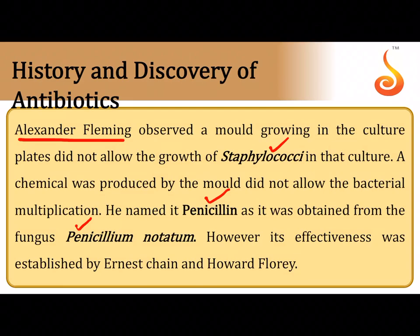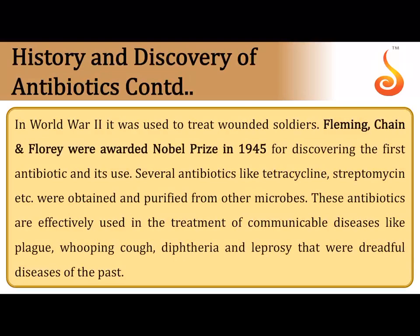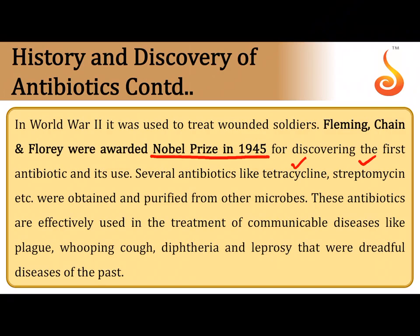Fleming used penicillin to destroy bacteria causing infections in wounded soldiers of World War. The effectiveness of this antibiotic was later established by Ernest Chain and Howard Florey. Fleming, Chain, and Florey were awarded the Nobel Prize in 1945 for their work in antibiotic discovery and for describing its efficacy. Later, many other antibiotics like tetracycline and streptomycin were obtained by purification from microbial byproducts in culture.